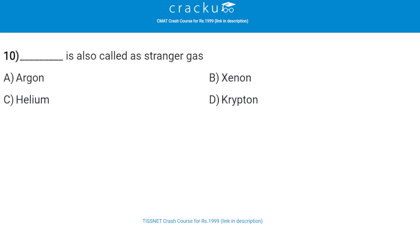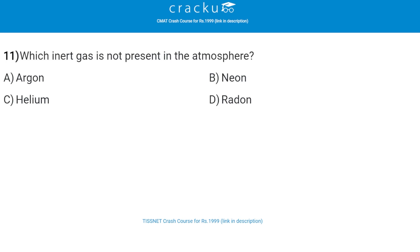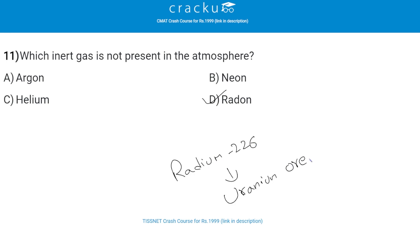Next: which gas is also called stranger gas? The correct answer is xenon, that is option B. Next: which inert gas is not present in the atmosphere? The correct answer is radon, that is option D. Radon is a radioactive substance produced due to the decay of radium-226 found in uranium ore, and is not present in the atmosphere.